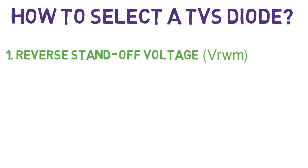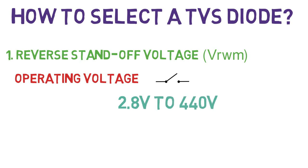This is a normal operating voltage of the diode. At this point, it has very high impedance across it. And this voltage ranges from 2.8V to 440V. This parameter depends upon the working voltage of the component.